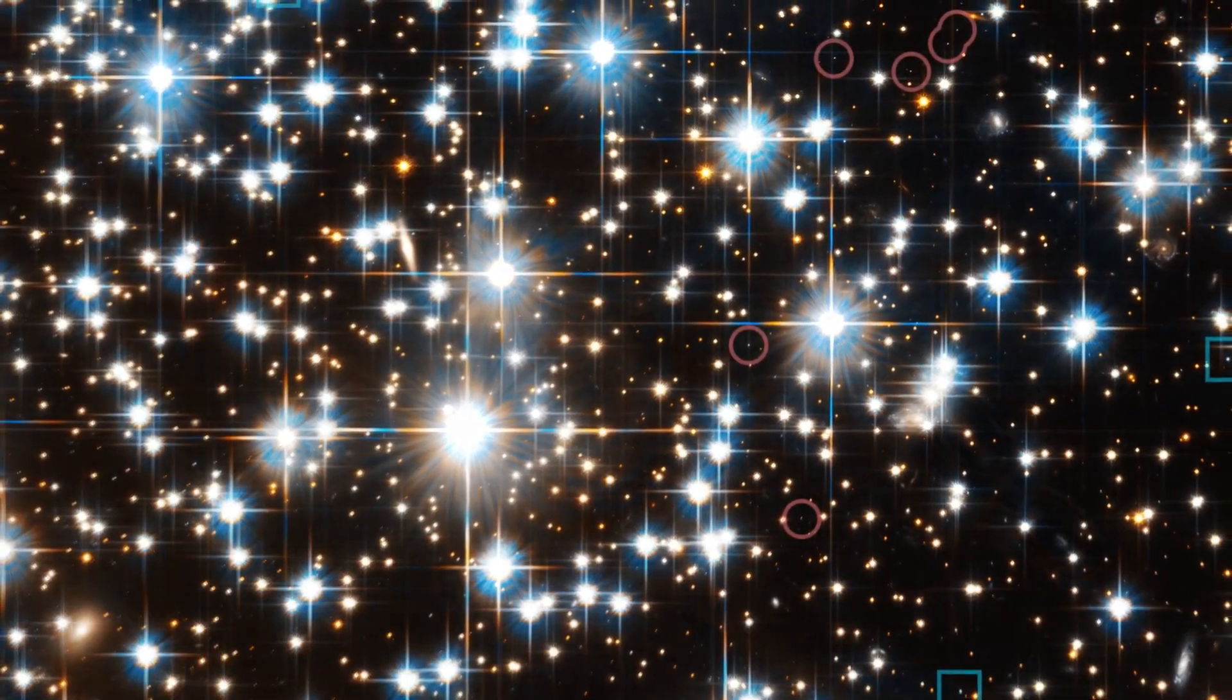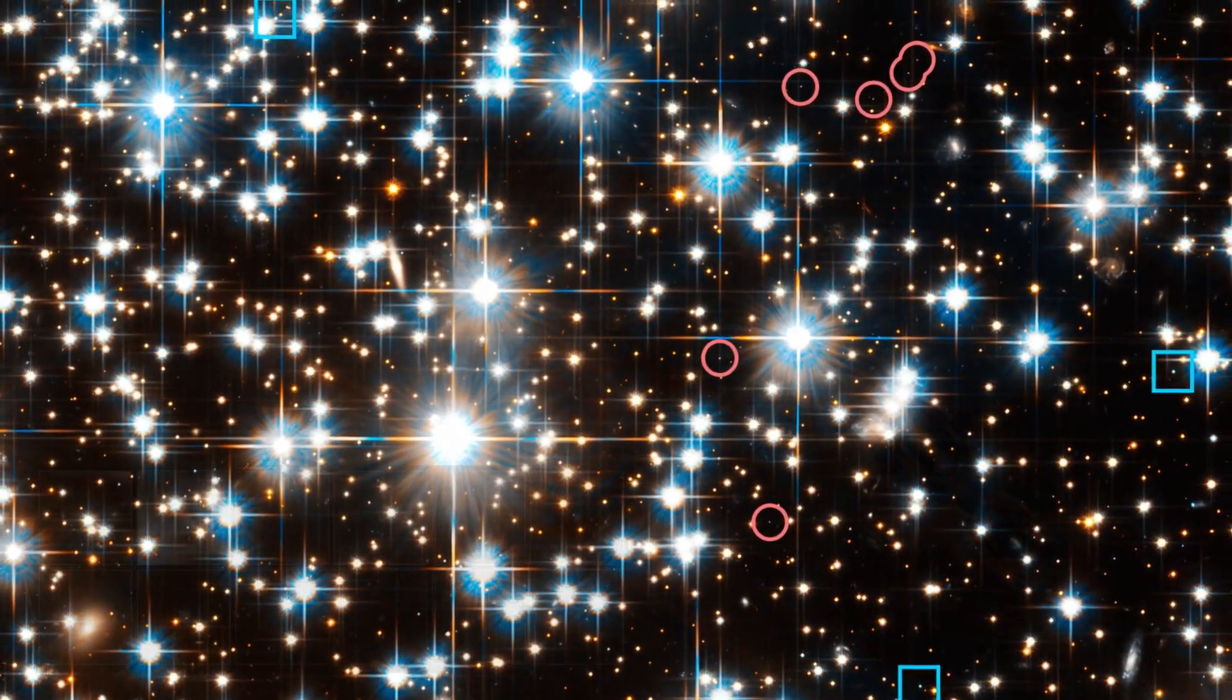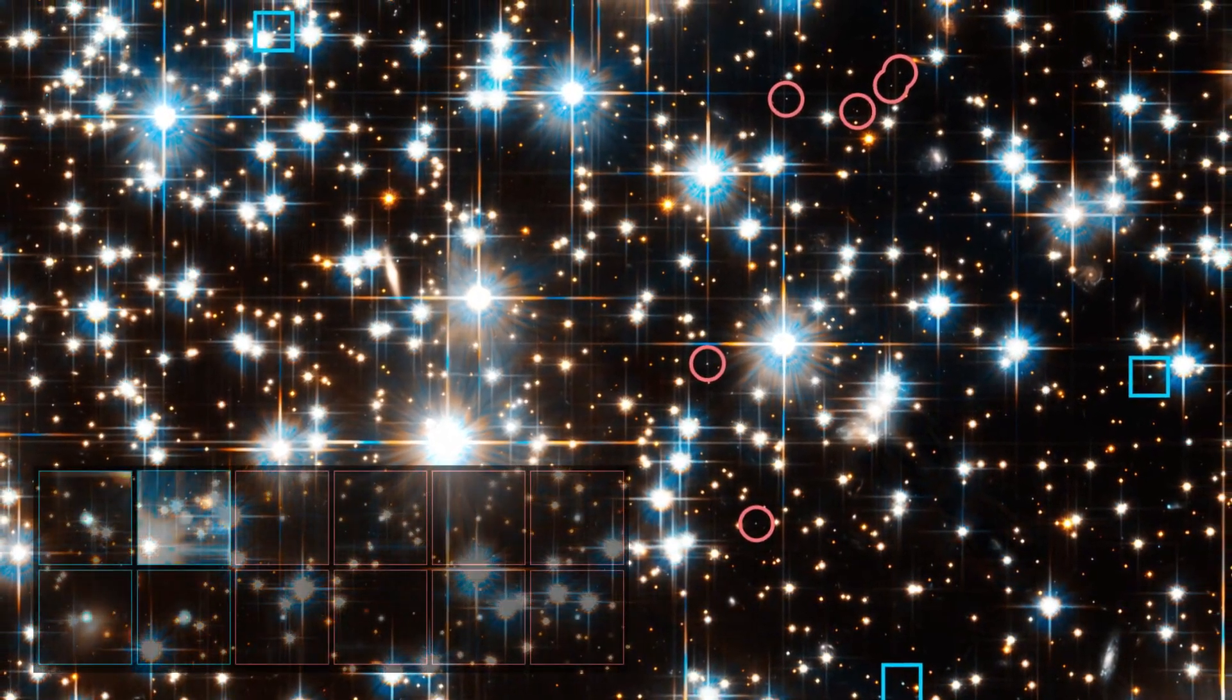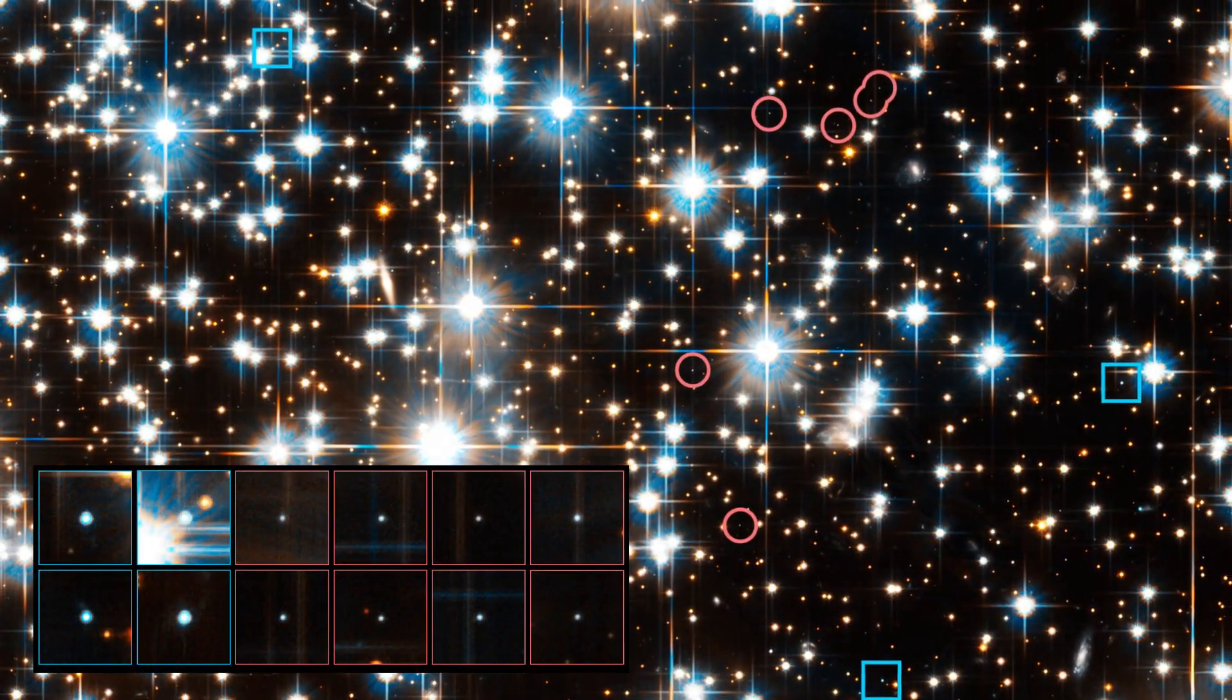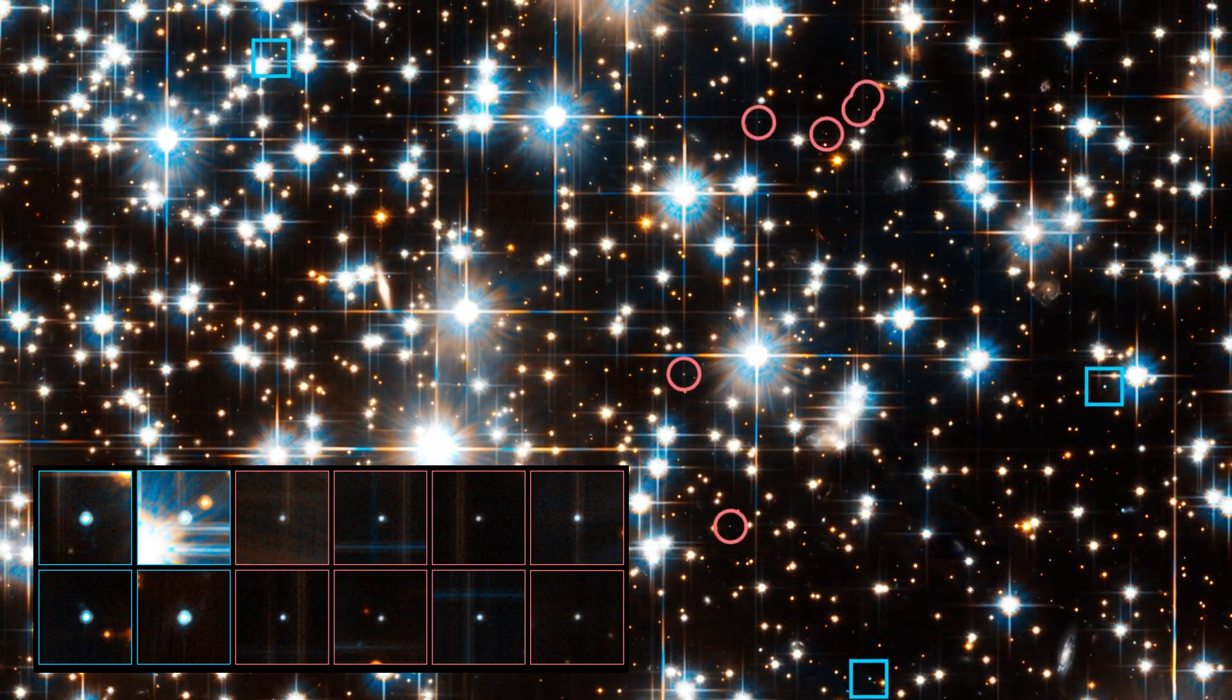The team plans to explore this possibility further, and hopes to continue this research by studying how common carbon stars are among similar white dwarfs, and how many stellar mergers might be hiding among the normal white dwarf family.